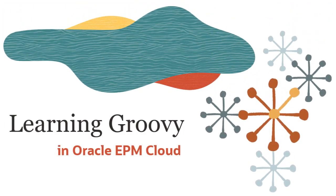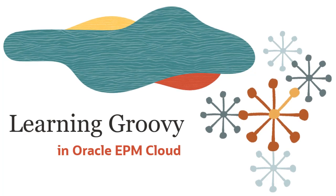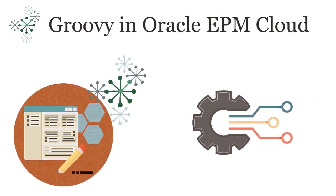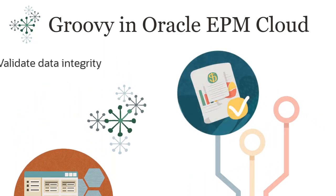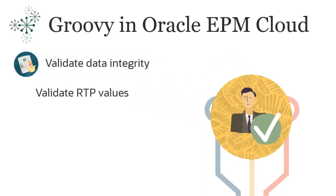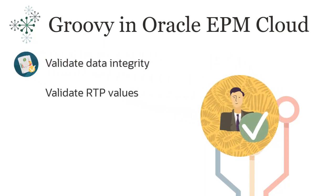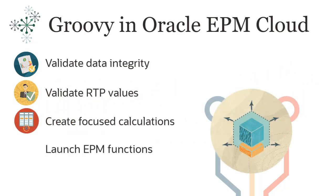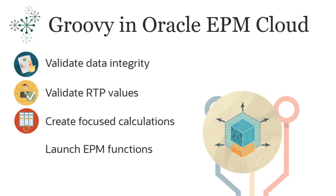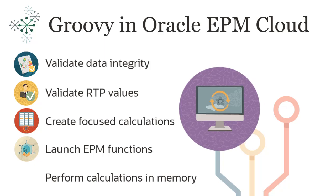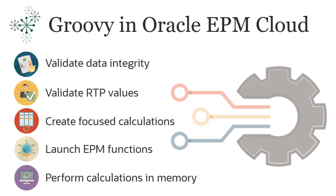Did you know that you can use Groovy Script in Oracle EPM Cloud? Oracle EPM Cloud lets you build business rules using Groovy to solve use cases that normal business rules can't solve. Imagine being able to run validation checks for data integrity before you submit data, validate runtime prompt values before you launch rules, create focused calculations to improve performance, launch EPM functions like calculation jobs or smart push operations, or perform complex calculations in memory before submitting the results. You can do all that and more with Groovy business rules.